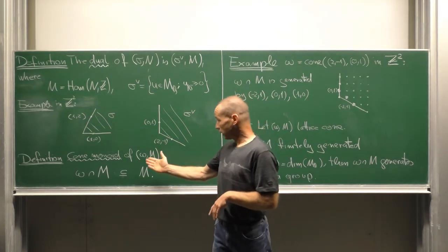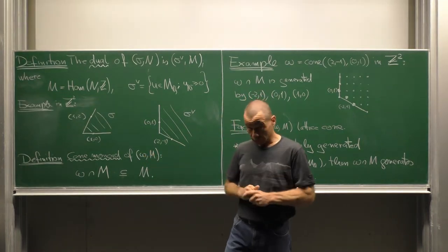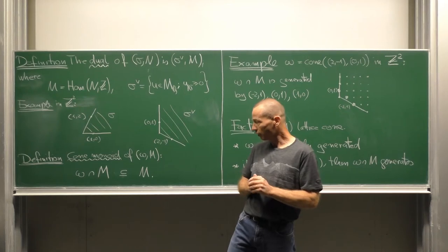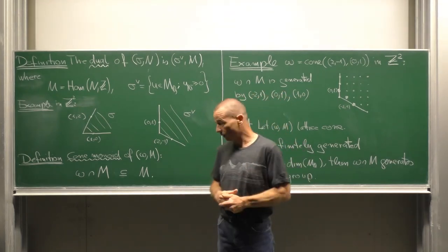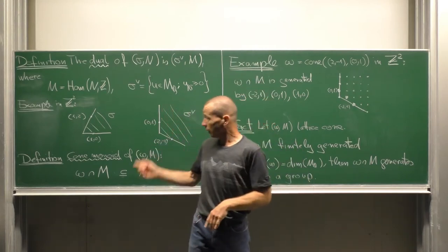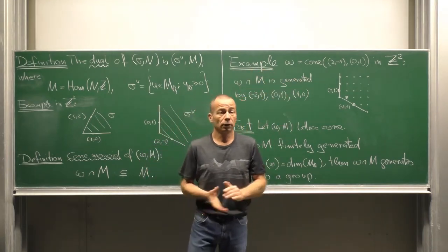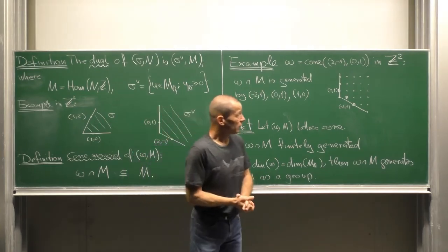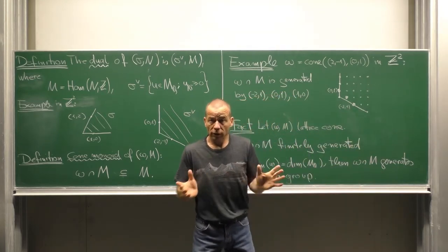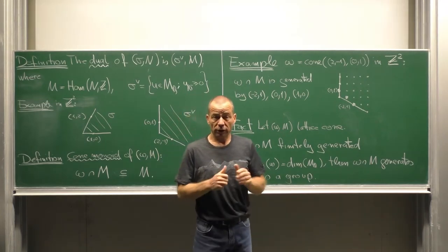Now, given a lattice cone omega in M, we obtain an associated cone monoid. This consists of all the lattice points of omega and is with respect to addition a sub-monoid of the lattice M. Here is an example. We take again this cone generated by (2,-1) and (0,1) and our question is about the lattice monoid. That means all the lattice points inside this cone.